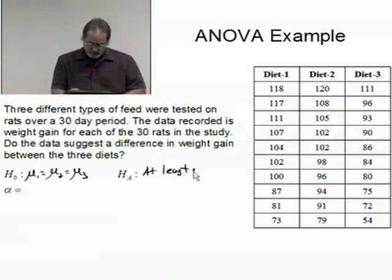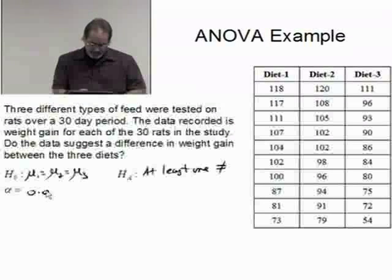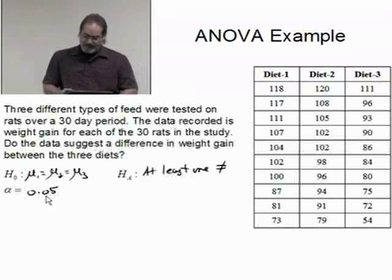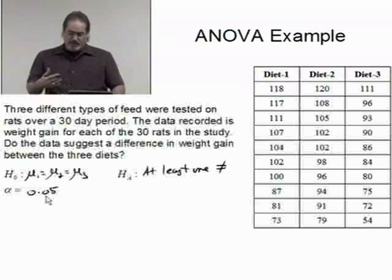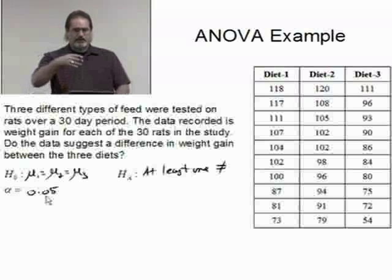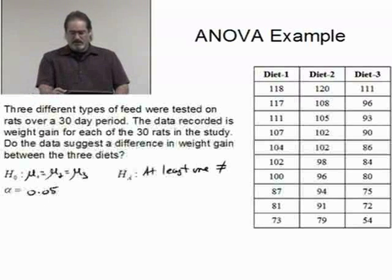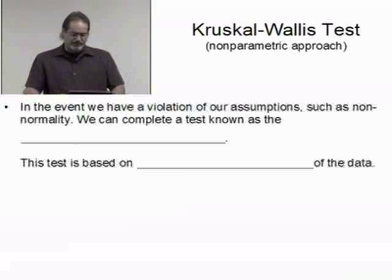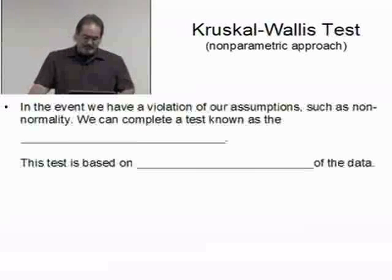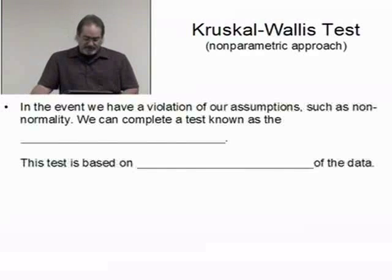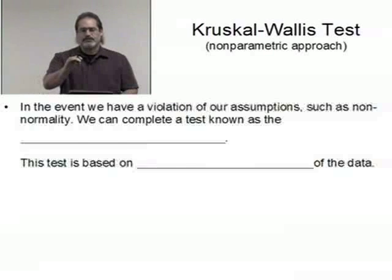Alpha is 0.05. We do our normality assumptions and we take a look at the normal plots and we find out that there's a violation. So if there is a violation of assumptions, such as the normality, actually you can use this if there's a normality assumption violation or a similar variance assumption violation.